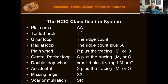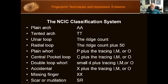In summary chart form: plain arch is double 'A'; tented arch is double 'T' (capitals); ulnar loop uses the actual ridge count; radial loop uses the ridge count plus 50. A plain whorl is 'P' plus the tracing; a central pocket whorl is 'C' plus the tracing; a double loop whorl is lowercase 'd' plus the tracing; an accidental whorl is 'X' plus the tracing. A missing finger is double 'X'; a scarred or mutilated finger is 'SR'.